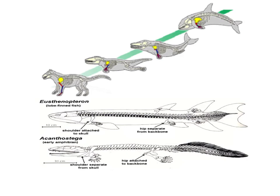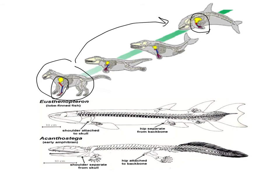The fish fin and whale flipper are another example of analogous structures — due to selection pressure and, in the whale's case, evolutionary reversal. Everything started in the water; life worked its way out, but the whale's ancestor went back into the water. So the fish limb and whale flipper are analogous, resulting from selection pressures and evolutionary reversal.